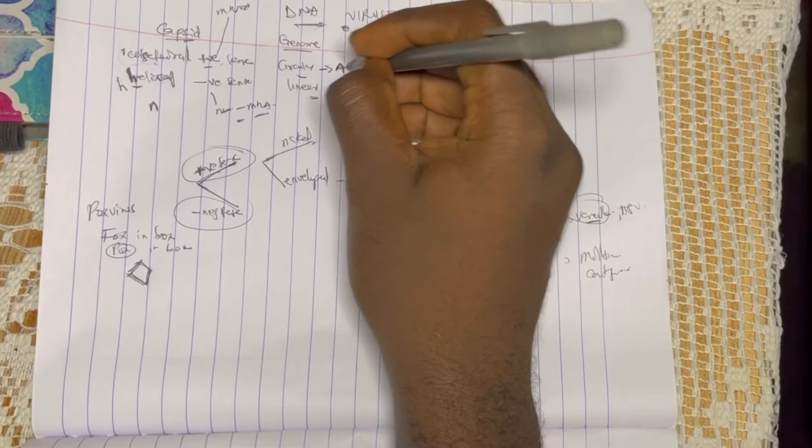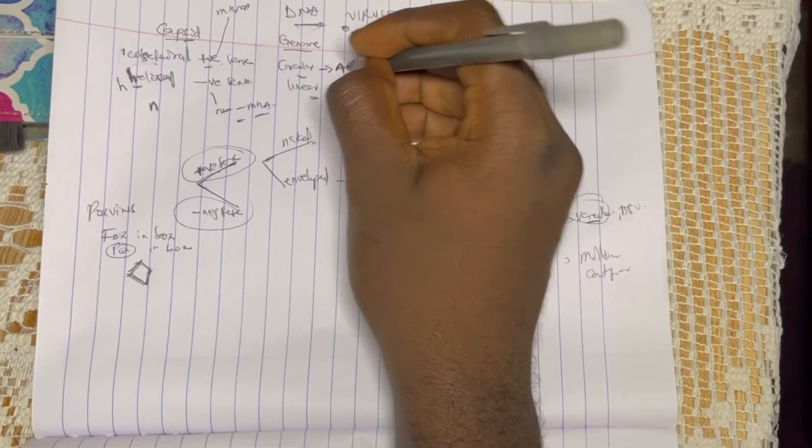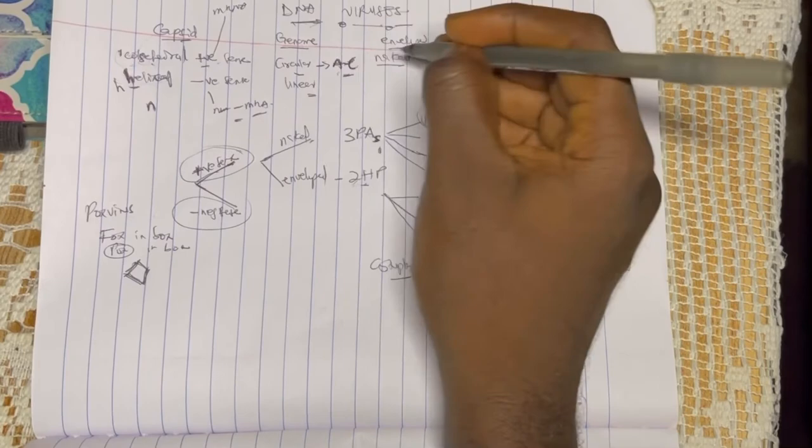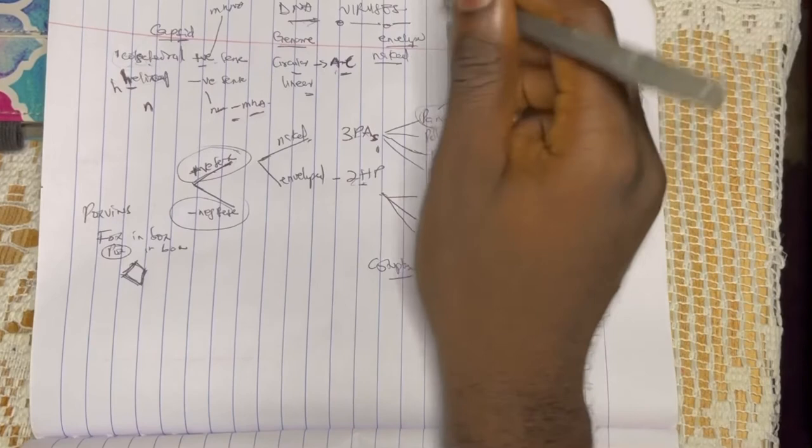One thing you can also remember is AC, like your air conditioner. That will help you keep the association of A with C. All the DNA viruses that end in A have their circular genome.